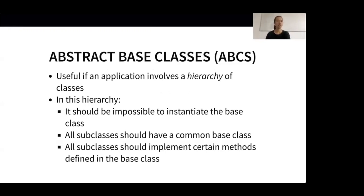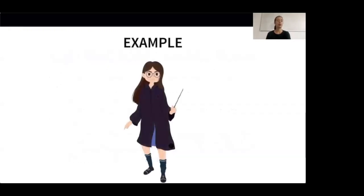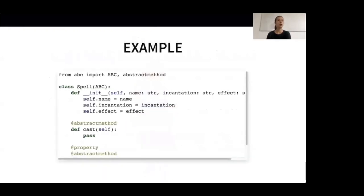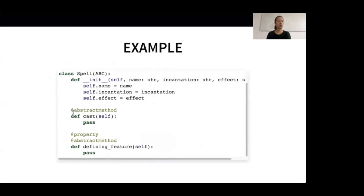Let's look at an example. In our magical universe, lots of different types of spells exist — for example, a spell can be a charm or a curse. This makes the Spell class a great application for Python's ABC module. To use an abstract base class, we first import Python's ABC module and let our new class Spell inherit from the ABC class. Then we flag the methods that must be implemented by all the subclasses with the decorator @abstractmethod. The Spell should have a name, an incantation, and a certain effect. Also, each spell subclass will have a defining feature and a cast method. Notice that these are abstract and not concrete implementations — our abstract base class Spell specifies the requirements of being a spell, but it doesn't tell you how to be a spell.